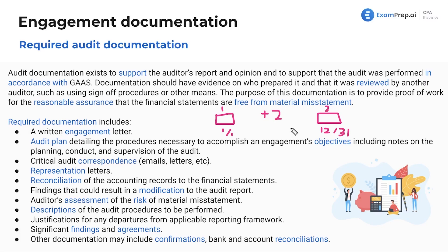Findings that could result in a modification of the report — if there's a reason you're giving a bad opinion, you include anything that led to that reasoning. The auditor's assessment of the risk of material misstatement — there's a whole section on that. And the description of audit procedures to be performed: will you be on site, reviewing inventory, inspecting PP&E, or hiring specialists for areas outside your expertise?